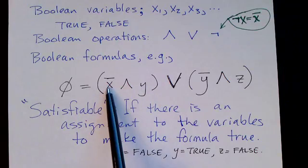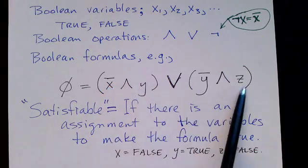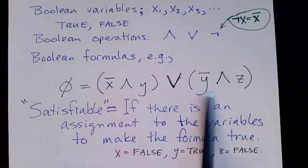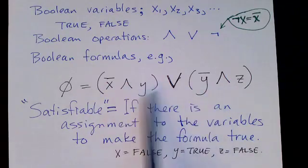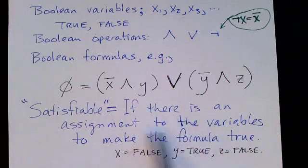X gets FALSE, Y gets TRUE, and Z gets anything, let's say TRUE. So we'll make this whole formula TRUE. So this is satisfiable. A Boolean formula is satisfiable if there is an assignment to the variables to make the formula TRUE.